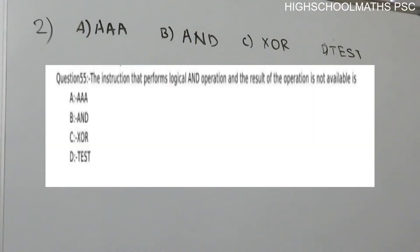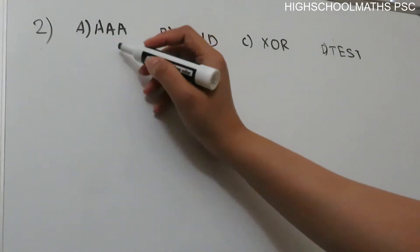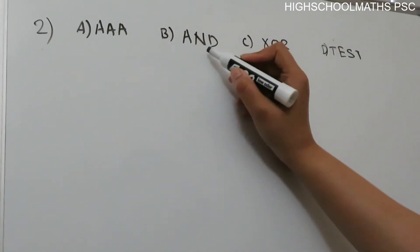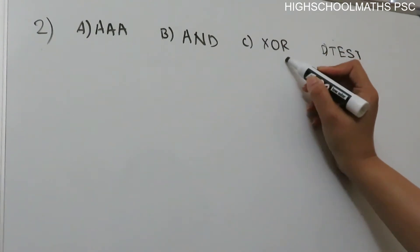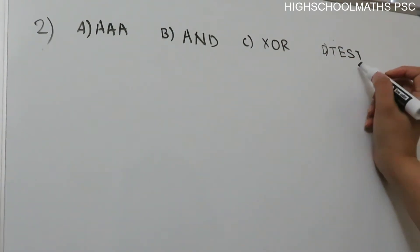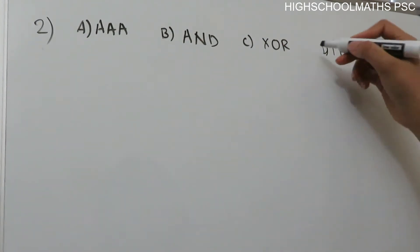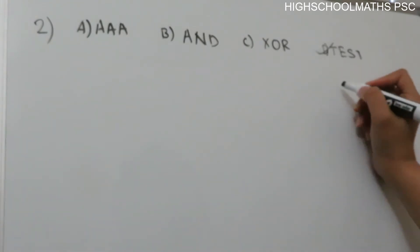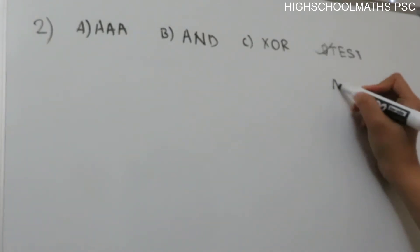The instruction that performs a logical AND operation where the result of the operation is not stored — we have 4 options: AND Instruction, XOR Instruction, and Test Instruction. Now, we have the question again with the answer option: Test Instruction. First, let us review the logical AND operation.